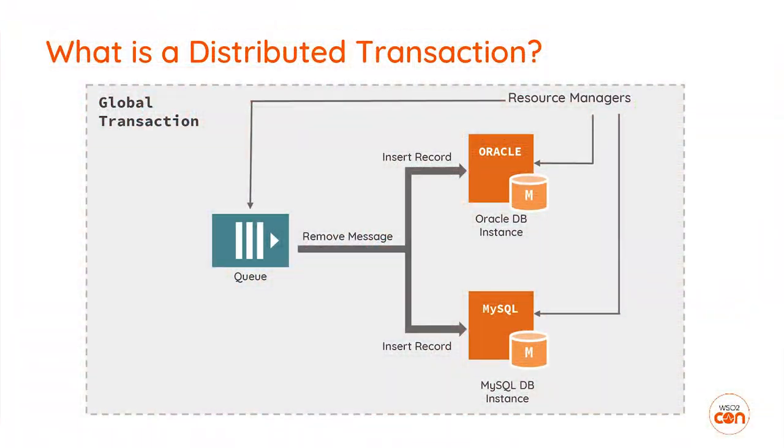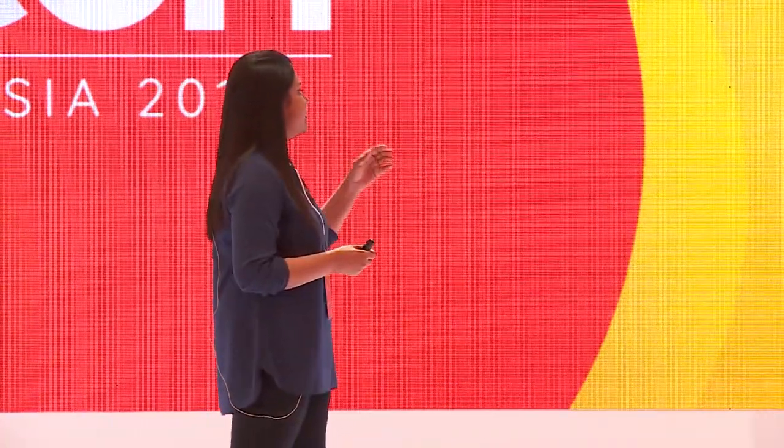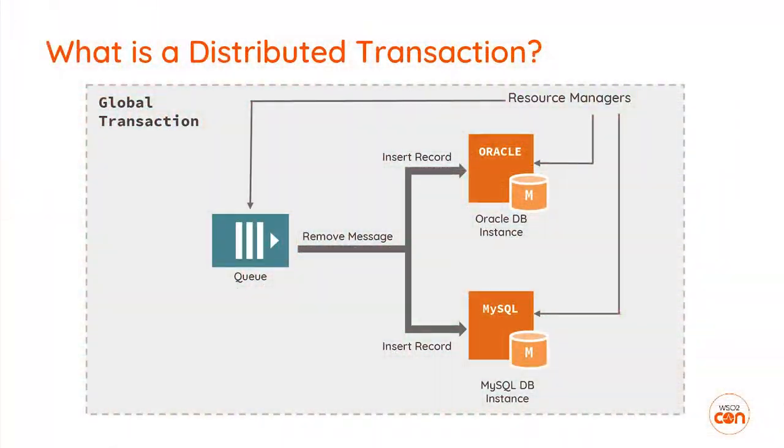Let's look at what a distributed transaction is. In a typical example, we have a queue, and we take messages from the queue and insert two different records to two different databases in different environments. Since we are dealing with data sources in different environments, we call this a distributed transaction. There can be failures at any point. If the first record inserts successfully but the second fails, we need to revert the first insertion as well — that is called rollback.